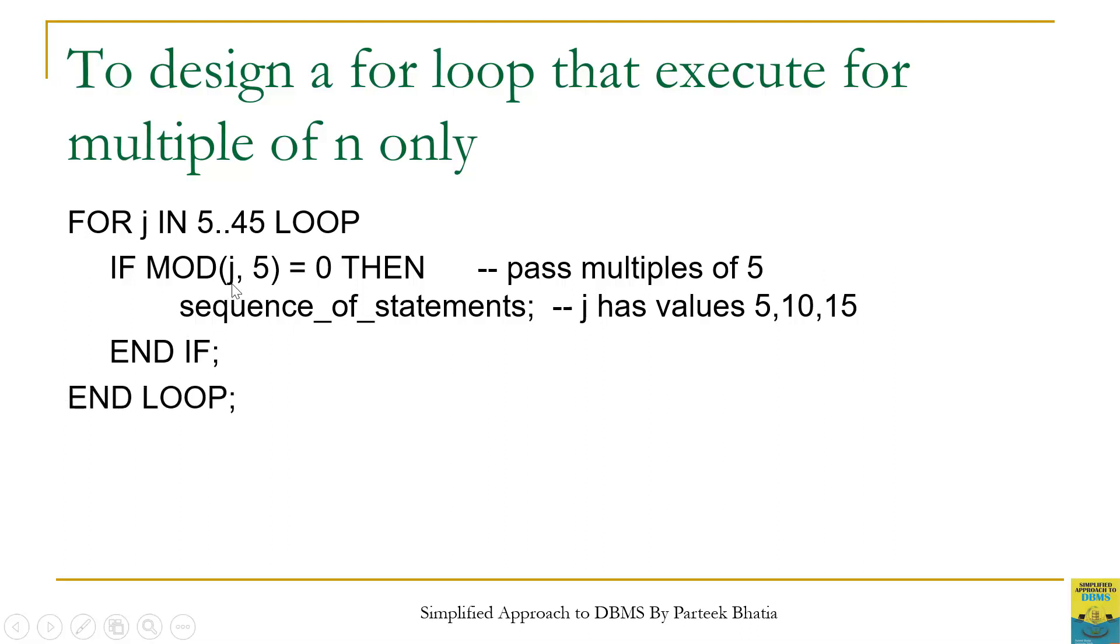j will initially have value 5. Mod function gives the remainder of division. 5 divided by 5 will have a remainder 0. So this group of statements will be executed for j equal to 5. Then j becomes 6, which will not return remainder 0.